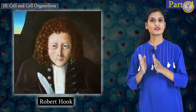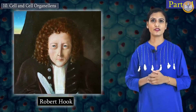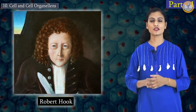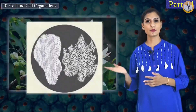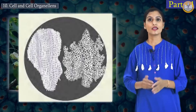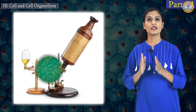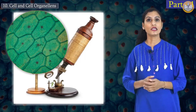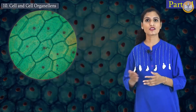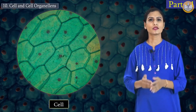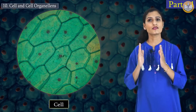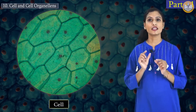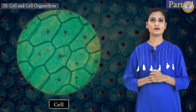In the year 1665, Robert Hooke examined a thin section of a cork tree under the microscope. He saw hexagonal compartments like a honeycomb, and named those compartments as cells. In Latin, cellula means a small room.